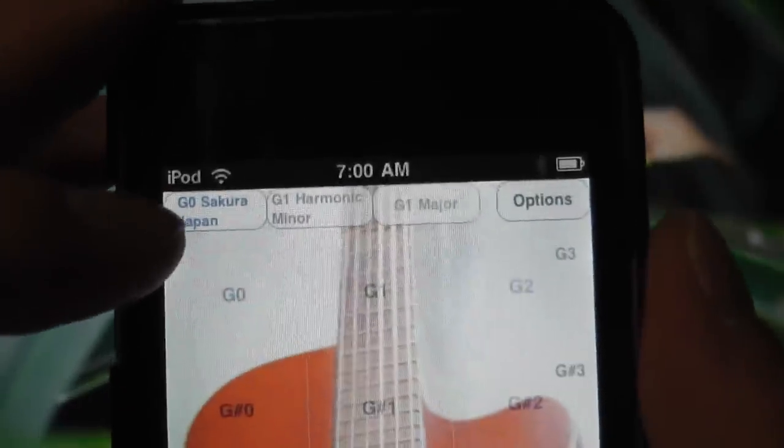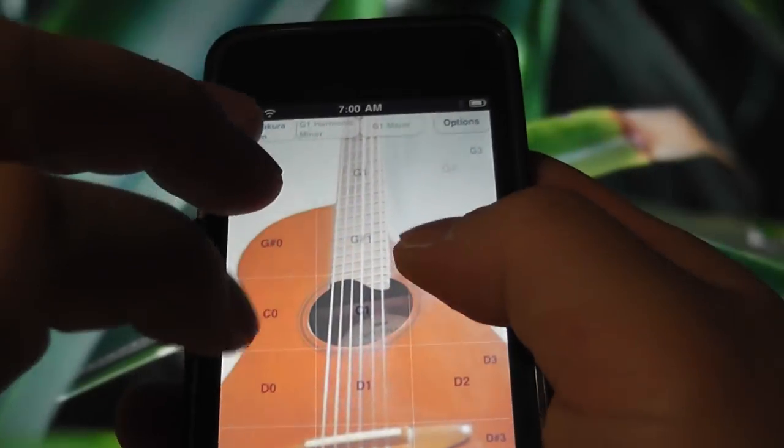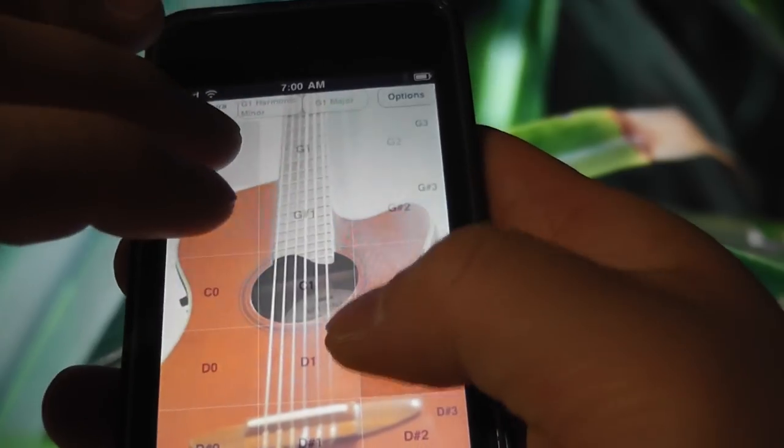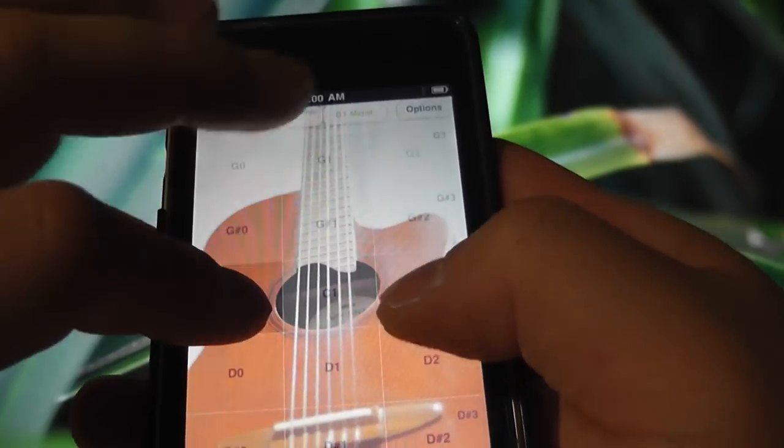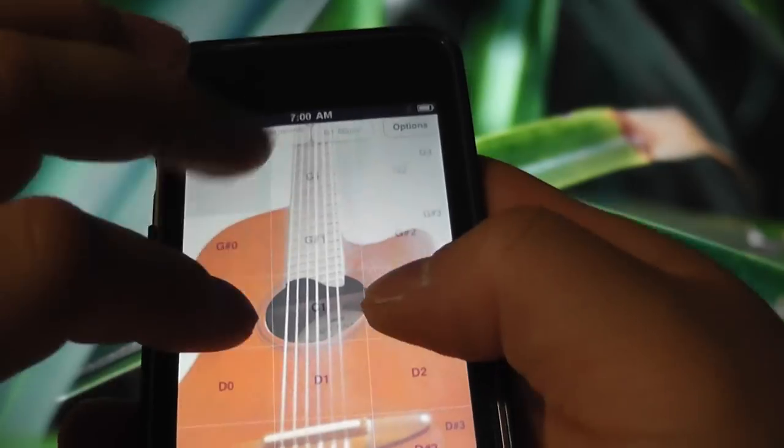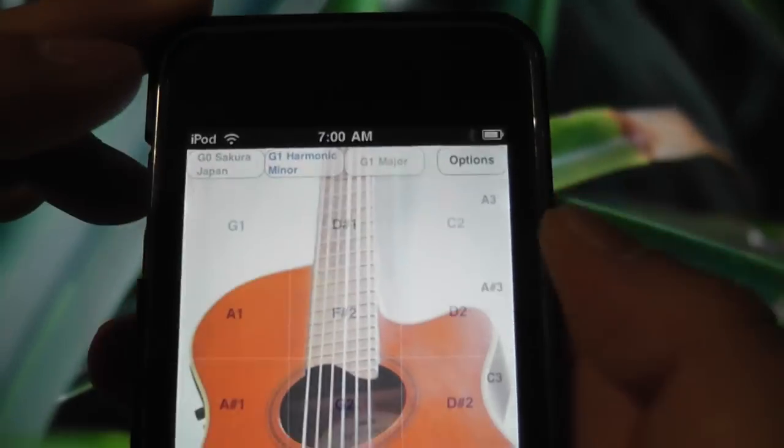So to switch to a scale, double tap it. So now we're in the Japanese scale. Double tap this one and we're in the harmonic minor scale.